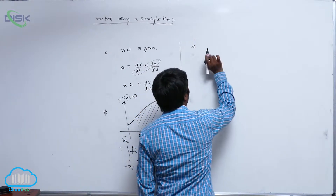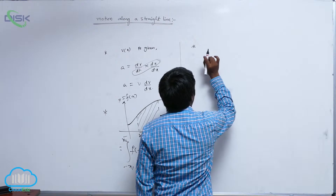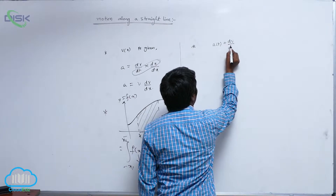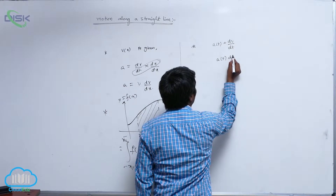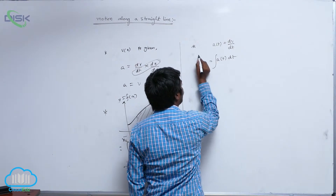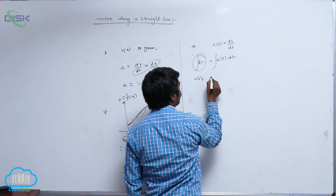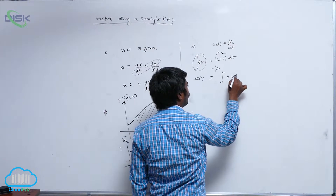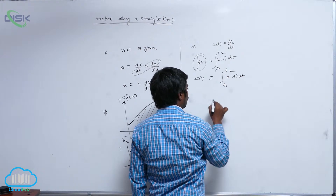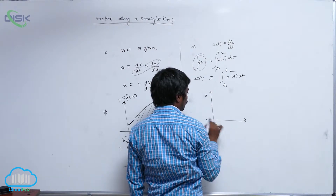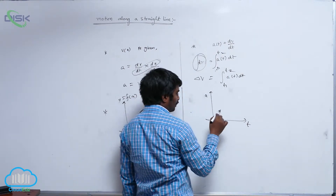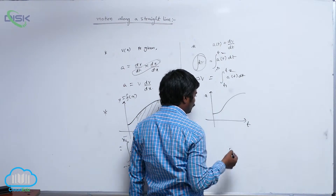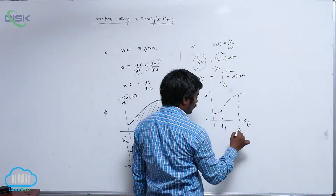From the a-t graph, a of t is equal to dv by dt. By doing integration, you get the change in velocity: delta v equals the integral of a of t dt from t1 to t2. That means if an a-t graph is given — where a is a function of t — and suppose you have any irregular or arbitrary shape, with t1 and t2 marked, you perform this integration.